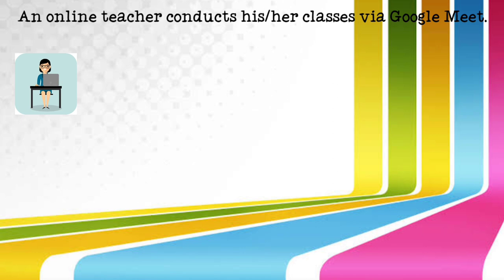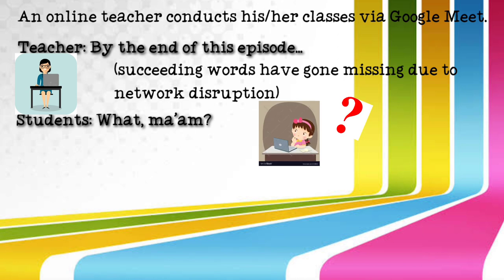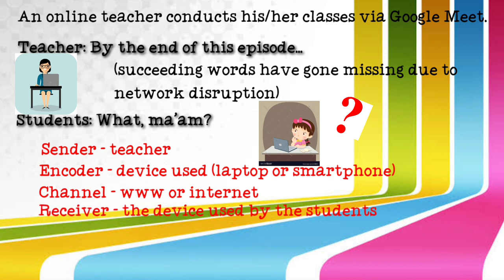A perfect example may go like this. An online teacher conducts his or her classes via Google Meet. Just as soon as the class starts, his or her reception or internet connection got poor. And as a result, his or her first few instructions or words didn't reach the destination or the receiver as intended or meant. What happened was like, 'by the end of this session, you are expected to...' Then the succeeding words have gone missing due to network disruption or poor reception or internet connection. The students would then be like, 'what ma'am?' In this example, the sender is the teacher, the encoder is the device used, could be a smartphone or a laptop, the channel is the wireless connection or internet, the receiver is also any device the students use, the destination is the students, and the noise is the network disruption or poor reception.